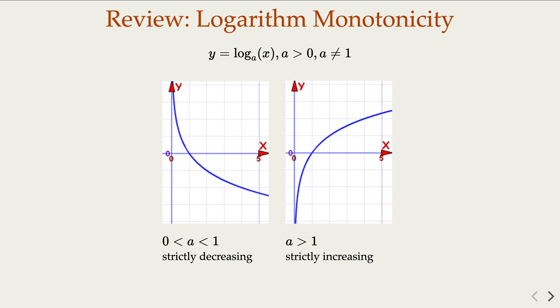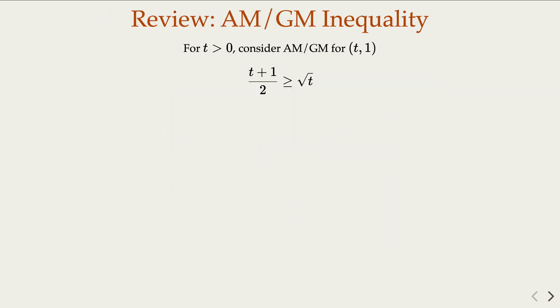Another thing we need to know is about what is called AM-GM inequality, which states that the arithmetic mean is always greater or equal to the geometric mean. In this case, we're concerning with two numbers, t, positive number, and 1. So we have this inequality. So that's the necessary background to solving this Gaokao math problem.